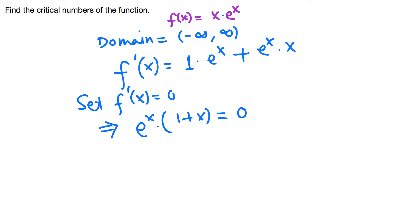So it's never zero. That means this implies one plus x must be zero. Subtract one from both sides, we get negative one. So the critical number, in fact only one in this case, is just negative one.